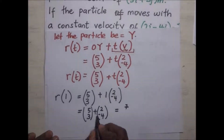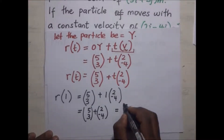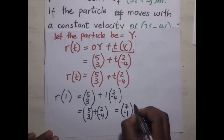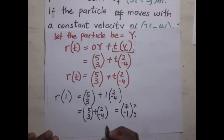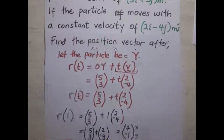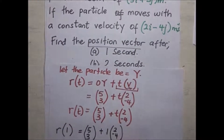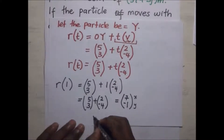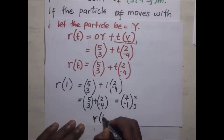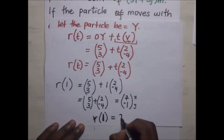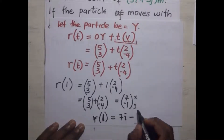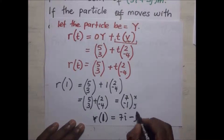Adding the vectors: 5 plus 2 gives us 7 in the x direction, and 3 minus 4 gives us negative 1 in the y direction. So the position vector r(1) is 7i minus j, and this is in meters. That is the position vector of the particle after one second.